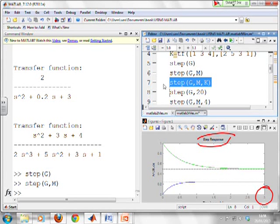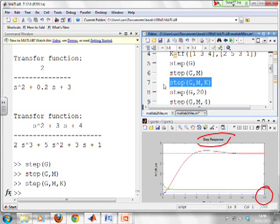I can do three transfer functions if I want. So there you see step(G,M,K). And I've now got three figures altogether. And the end time has moved to 18.